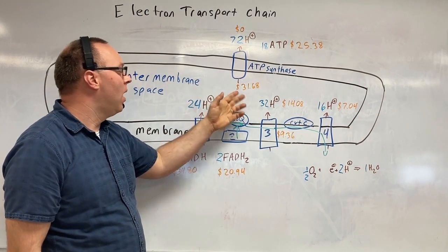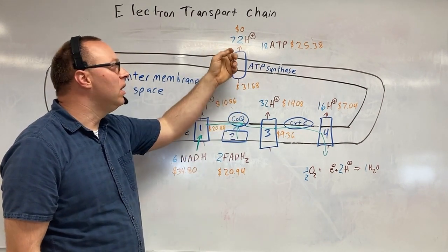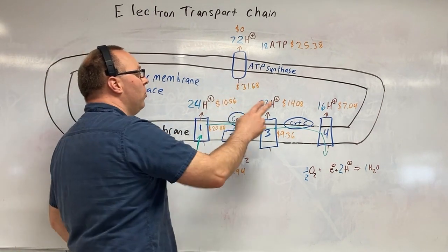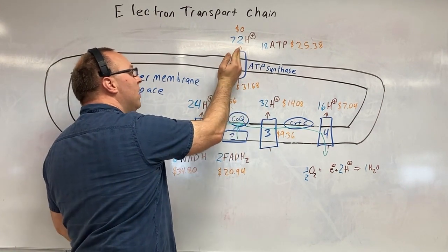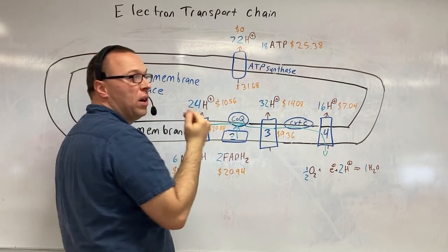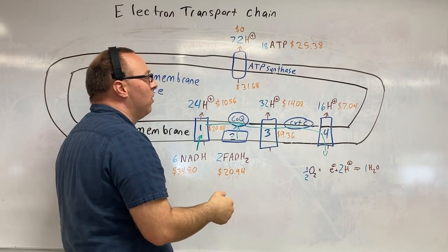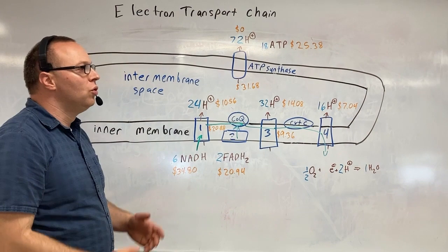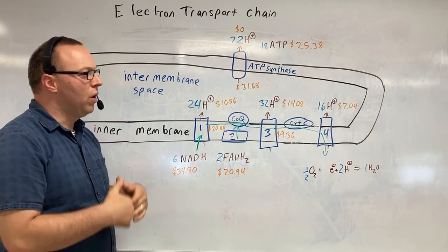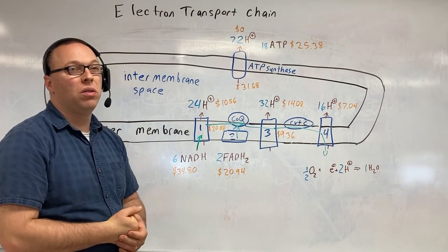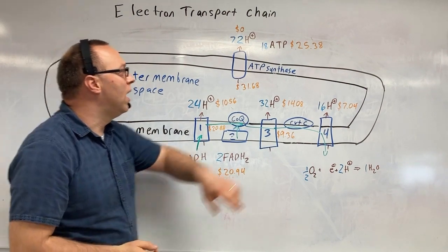Same idea here with the hydrogen. It's not going to want to leave if it doesn't get to waste some energy. So what we do is we force this ADP into becoming ATP. We're actually able to create about 18 ATP right here. And so we're only storing about $25.38 worth of energy.